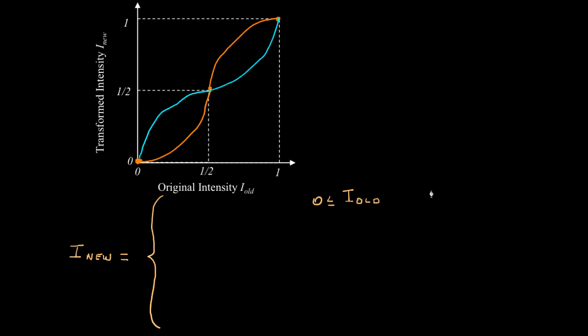So here's the interval where the input, the original intensity, is between 0 and 1/2. And here's an interval where the input intensity is between 1/2 and 1.